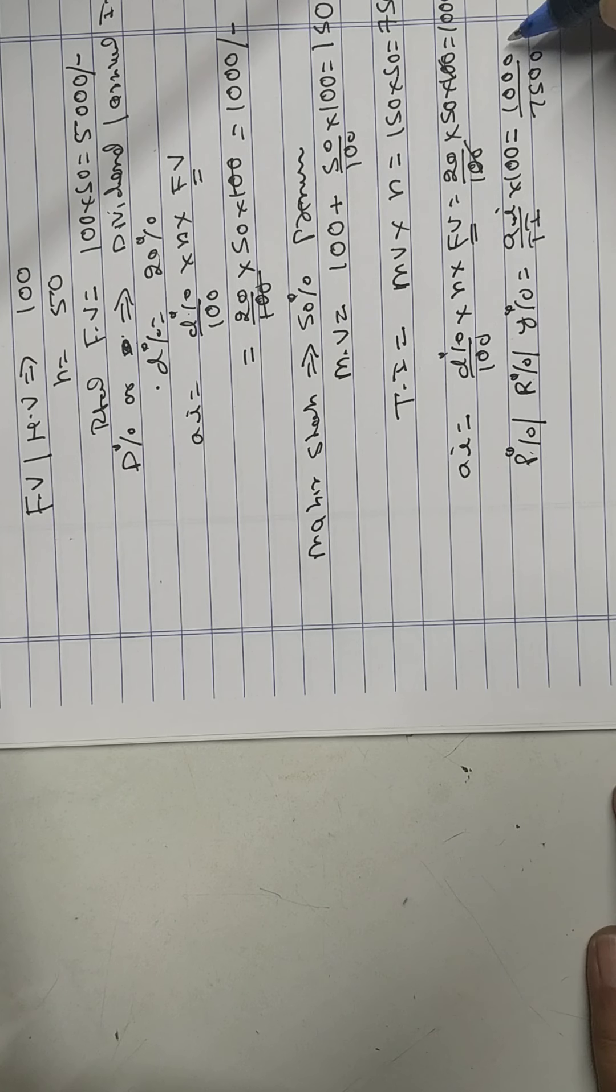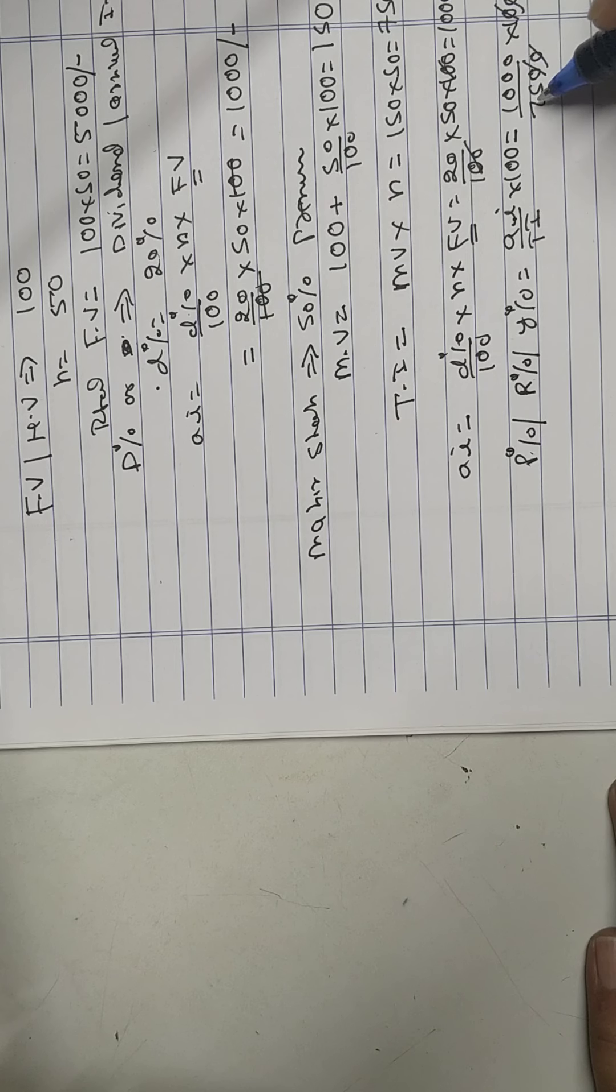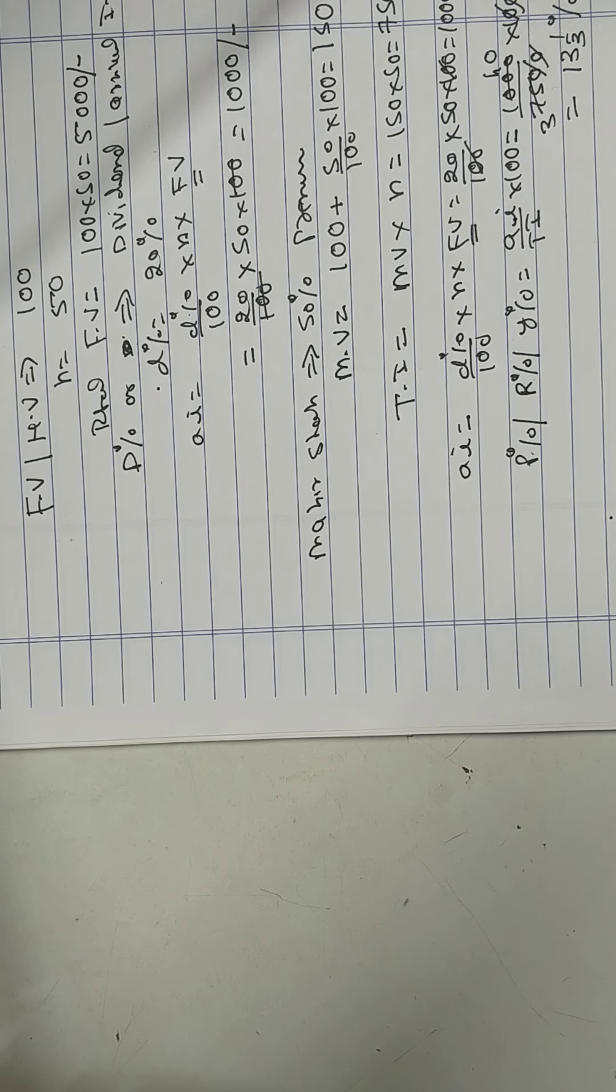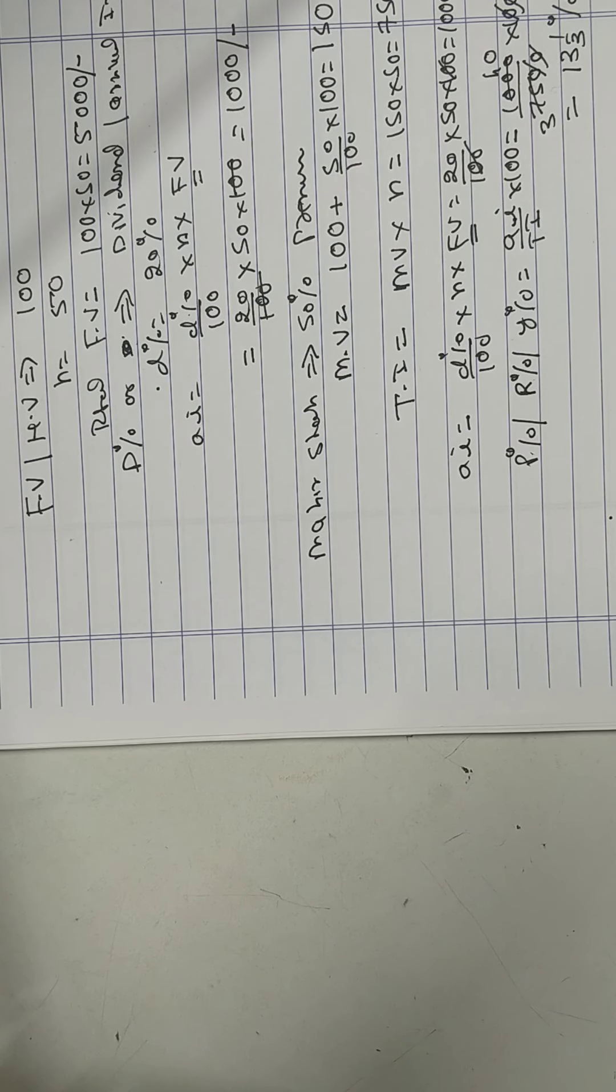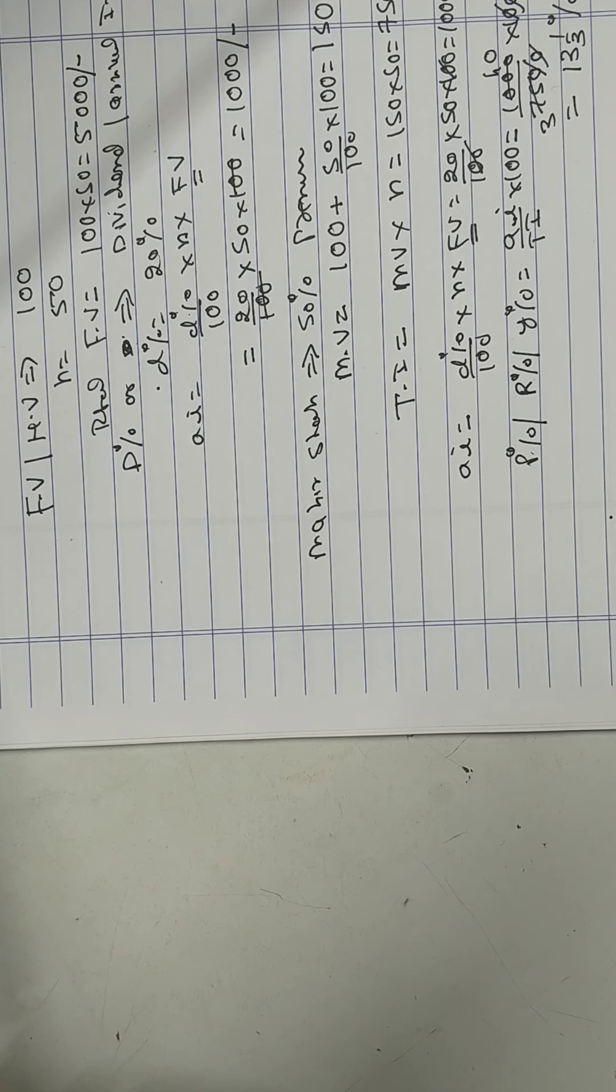But Mahir Shah wants to calculate his profit on his investment. Profit percent, or rate of return, or yield percent - are one and the same. Formula is annual income upon total investment into 100. How much money he got? 1000. And Mahir Shah invested 7500, into 100. Cancel. So Mahir Shah got 13 and 1 upon 3% on his investment.